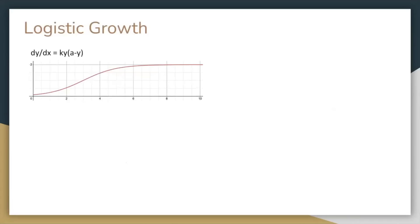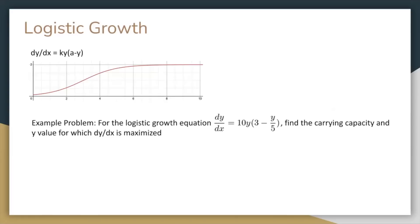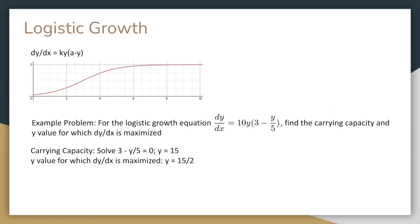Logistic growth is modeled with the differential equation dy over dx equals ky times (a minus y). The solution may look something like this. From this graph, we can see that the carrying capacity is 2, because y approaches 2 as x increases. If you're given a logistic growth equation, to solve for the carrying capacity, solve for dy over dx equals 0. One solution is y equals 0, and the other solution, in this case y equals 15, is the carrying capacity. The y value for which dy over dx is maximized is half the carrying capacity.